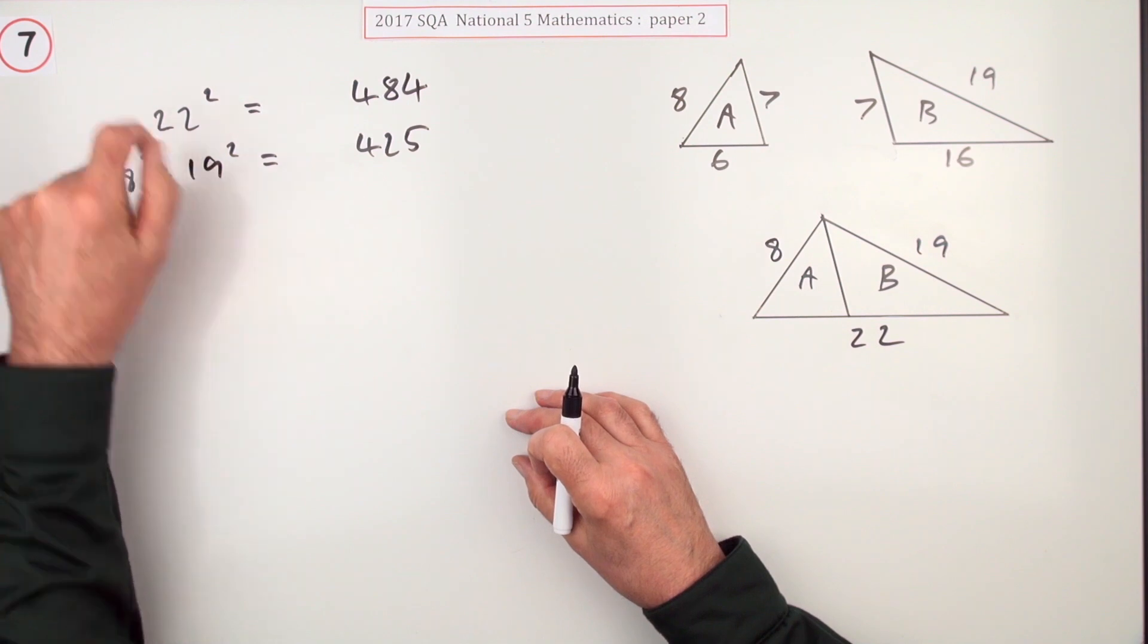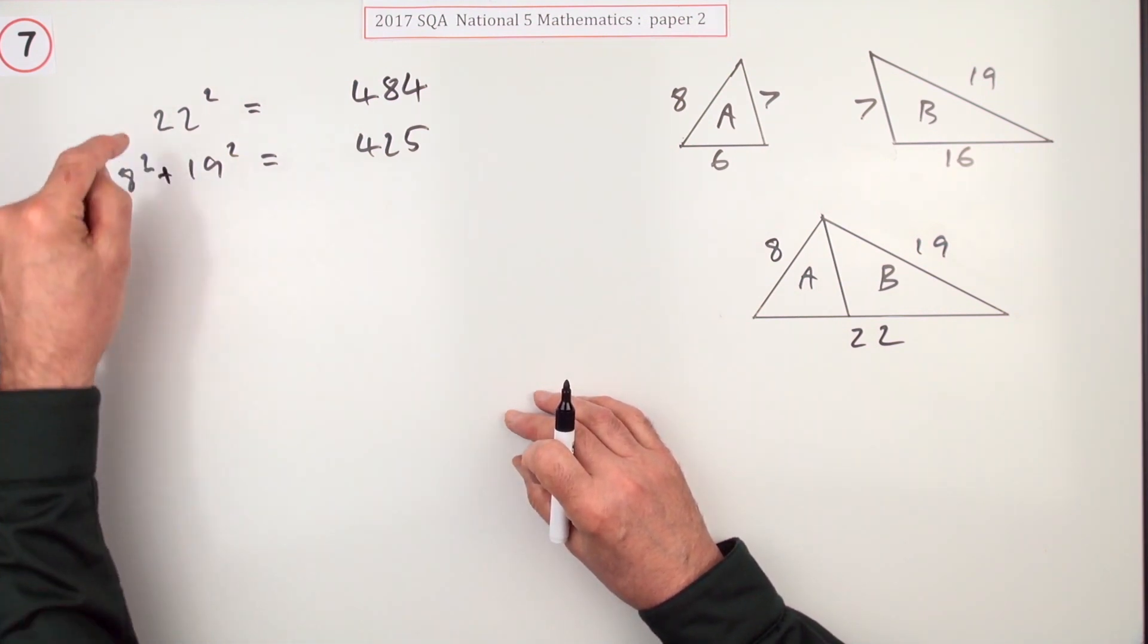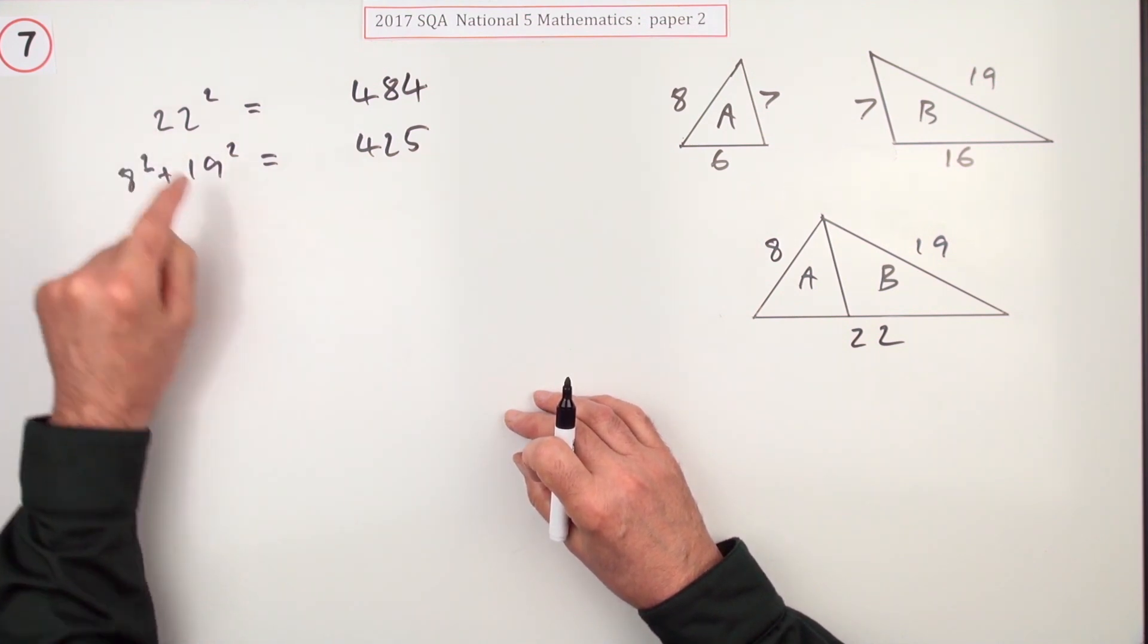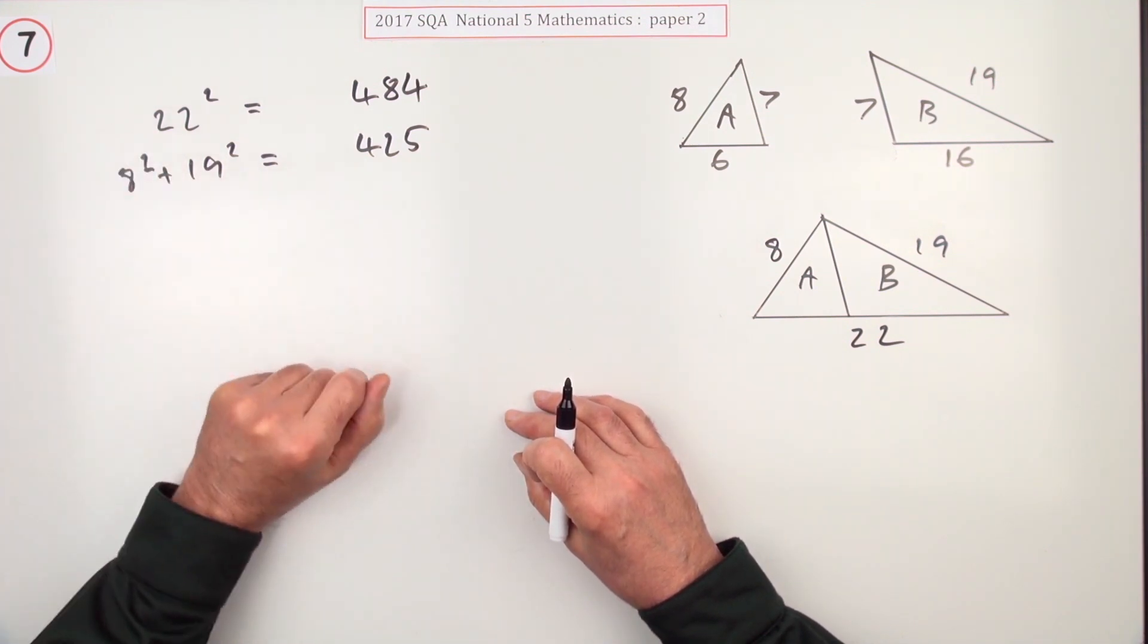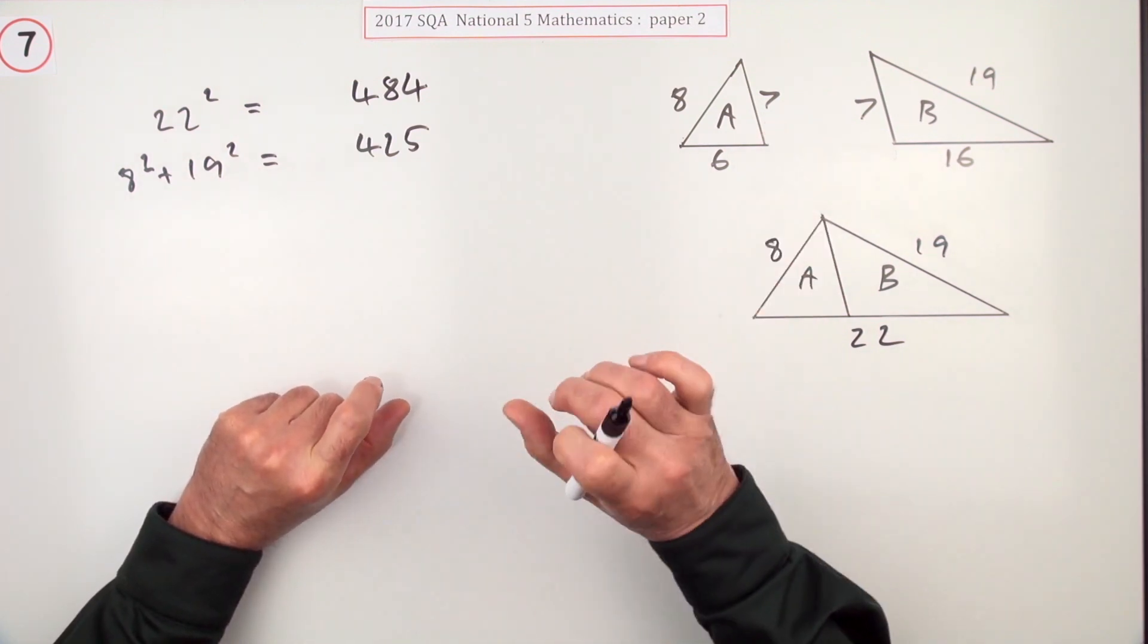But there are other ways of getting 22. There's patterns you can look for. It could be useful to look for these patterns. 22 is 2 times 11, so 22² should be 2² times 11², which is 4 times 121, which is 484.